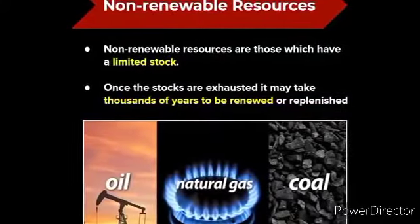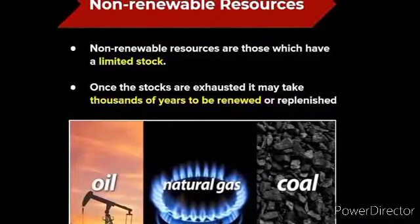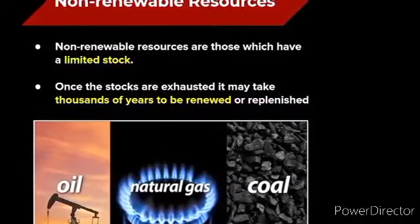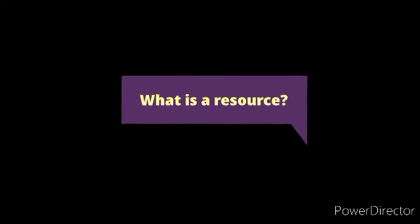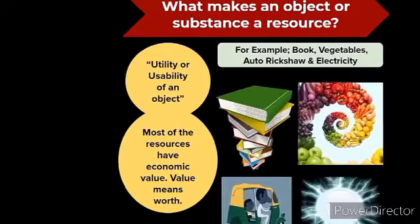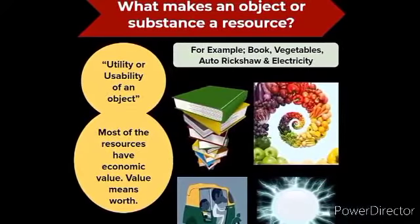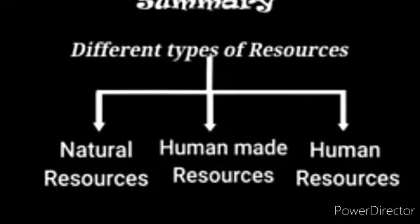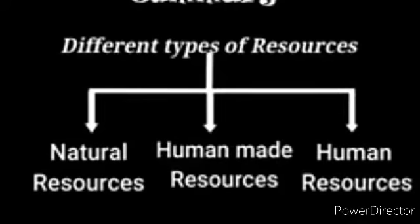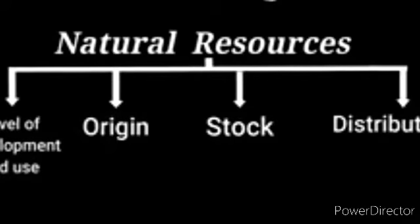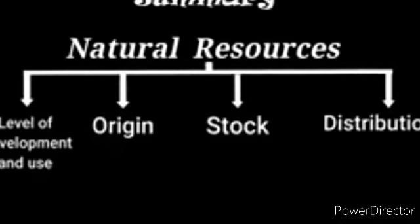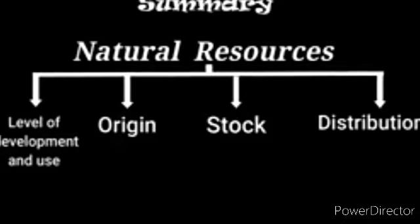Today we read up to here; in the next video we will move on further. To summarize: anything that can satisfy human needs is a resource. There are three types — natural, man-made, and human resources. Natural resources are further classified on the basis of their origin, stock, development, and distribution.